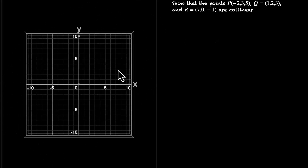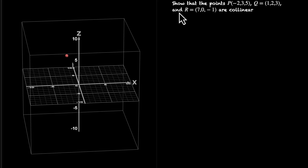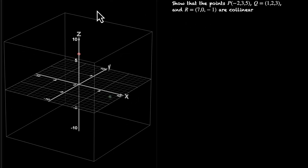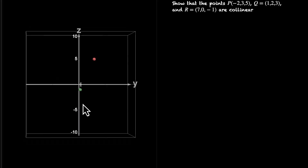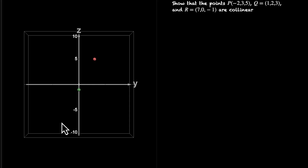Let's do this together. Let's mark the points. P is (-2, 3, 5) — moving -2 along X, 3 along Y, and 5 along the Z axis. R is (7, 0, -1) — moving 7 along X, not moving along Y, and going down 1 along Z. Then Q is (1, 2, 3). Can you see that all three of them are actually on a straight line? We can see this visually with a tool, but usually we need a mathematical way to determine whether points are collinear or not.